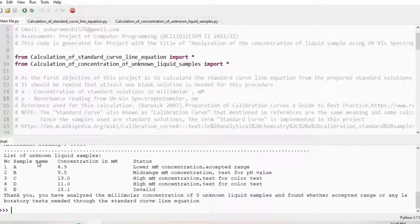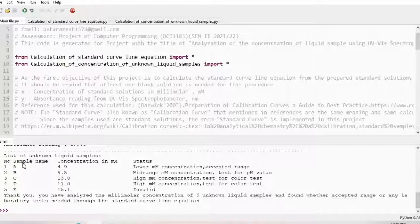So here we have already calculated the unknown liquid samples concentration for sample A to E and we also know the status, which whether they are accepted range with the lower millimolar concentration, and mid-range means we have to test for finish value.